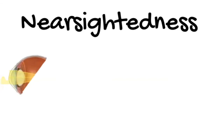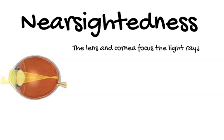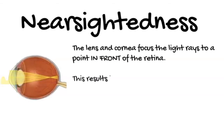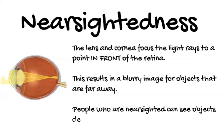If a person is nearsighted, the lens and cornea focus the light rays to a point in front of the retina. This results in a blurry image for objects that are far away. People who are nearsighted can see objects clearly up close, but not far away.